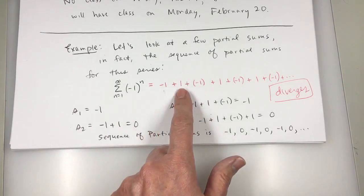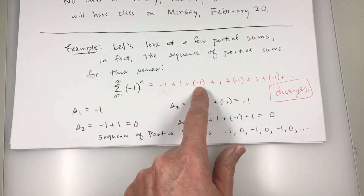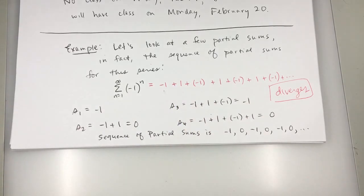Because the first term's negative, the second one's positive, the next one's negative. It's alternating back and forth between positive and negative. And this alternating series does diverge.